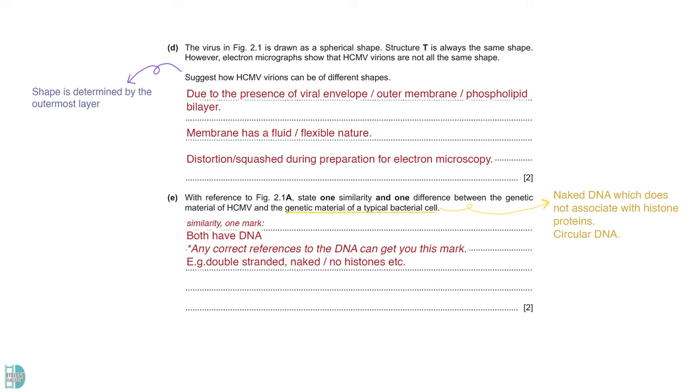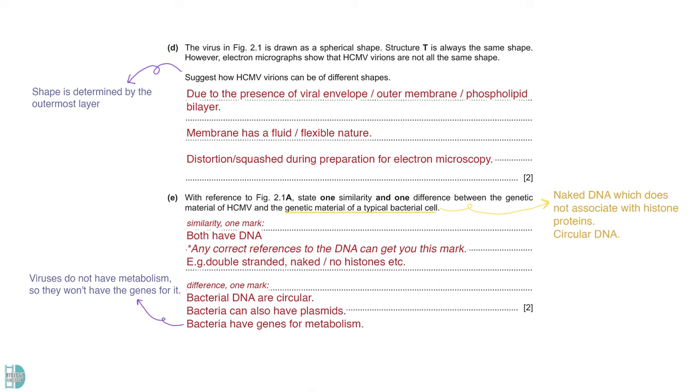The differences including, bacteria DNA is circular while this virus has linear DNA. Bacteria may have smaller bits of circular DNA called plasmid, while this virus does not have it. In terms of the genes in the DNA, bacteria have genes for metabolism. While viruses do not have metabolism, so naturally they won't have the genes for it. And lastly, it is the position of the DNA. Bacteria DNA lies freely in the cytoplasm, while viral DNA is surrounded by capsid.